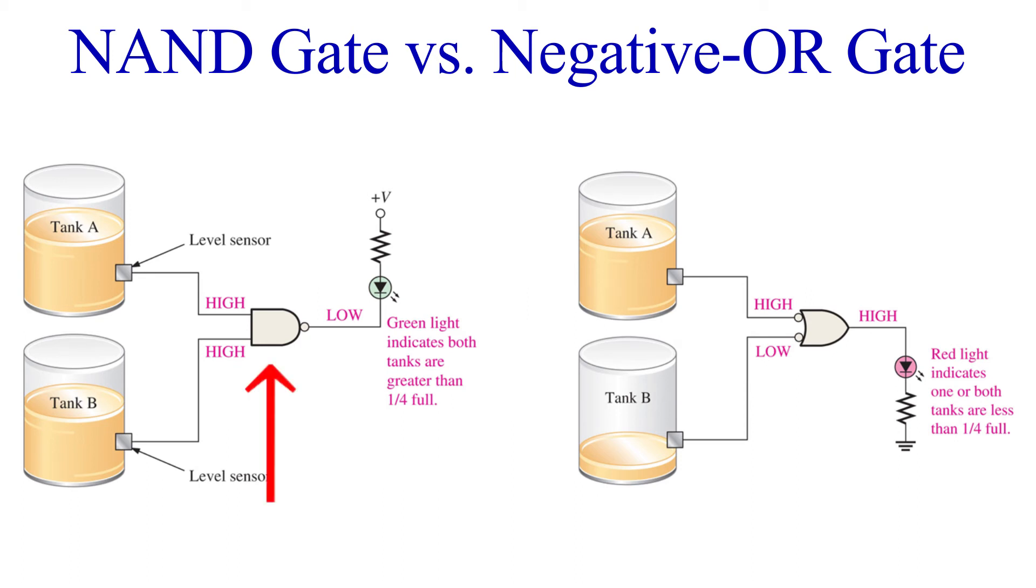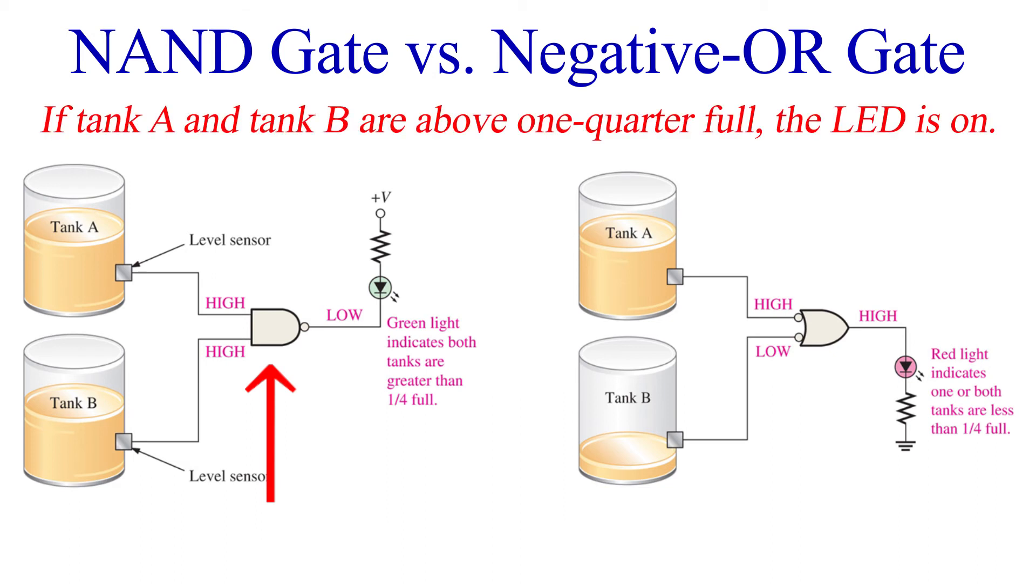And a red LED to indicate when one of the tanks falls below 25%. So for the green LED, we will need the NAND gate. Using this gate, we have the following logic: if tank A and tank B are above one quarter full, the LED is on. When one or both of the tanks falls below 25%, the logic switches to a high low or low low situation.